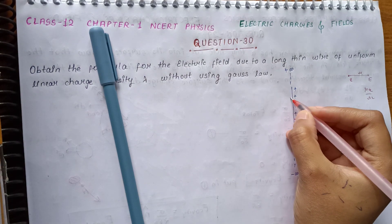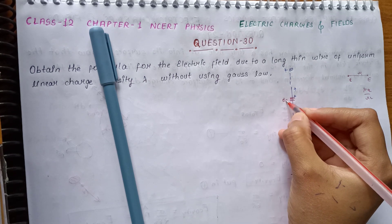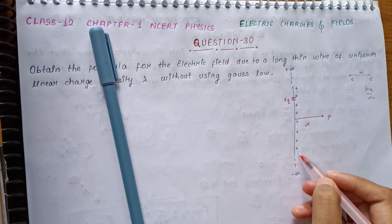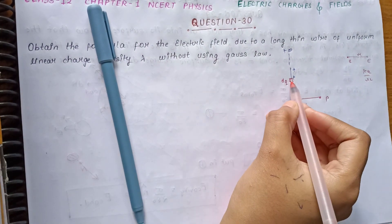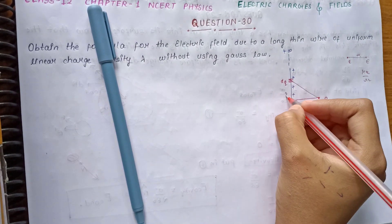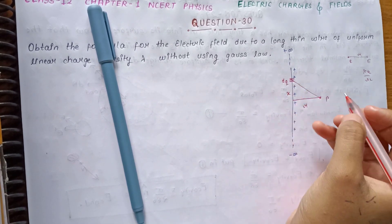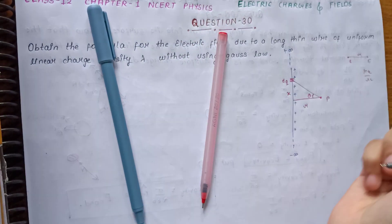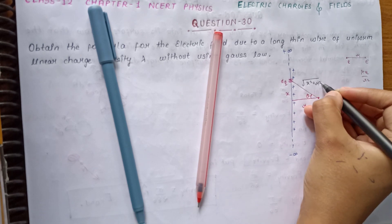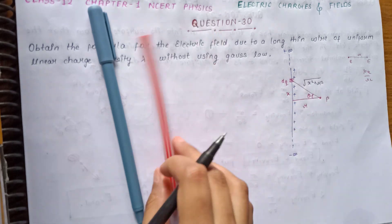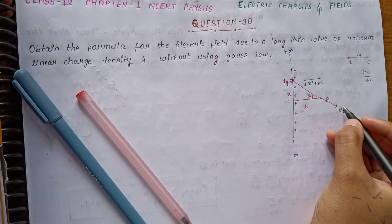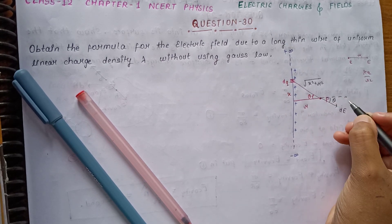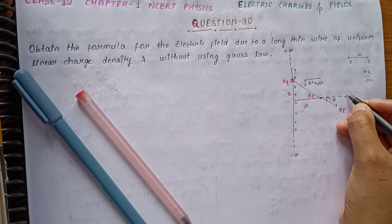Let us consider we have a small charge dq in a small portion of the wire. We integrate over the whole wire. For this small charge dq, the distance to point P is the hypotenuse, which is √(x² + r²), where x is the distance along the wire and r is the perpendicular distance. For a positive charge, the electric field dE points away.